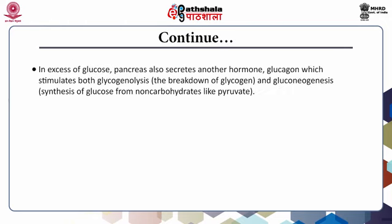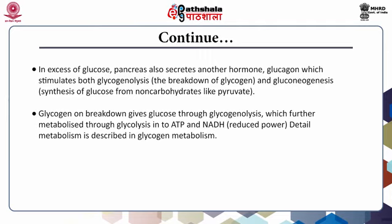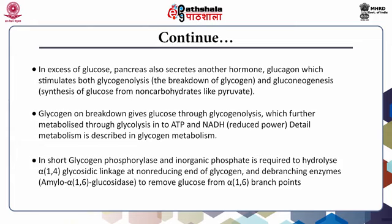In excess of glucose, the pancreas also secretes glucagon, which stimulates both glycogenolysis (the breakdown of glycogen) and gluconeogenesis (synthesis of glucose from non-carbohydrates like pyruvate). Glycogen on breakdown gives glucose through glycogenolysis, which is further metabolized through glycolysis into ATP and NADH. Glycogen phosphorylase and inorganic phosphate are required to hydrolyze the alpha-1,4 glycosidic linkage at the non-reducing end of glycogen, and debranching enzymes (amylo-alpha-1,6 glucosidase) remove glucose from alpha-1,6 branch points.